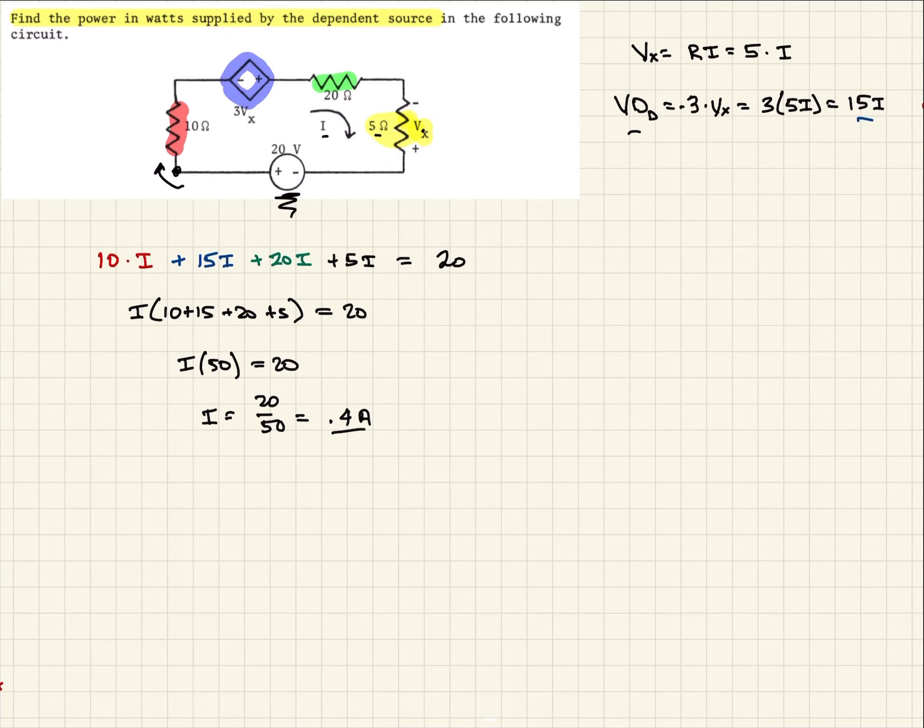Okay. So now we go back to this equation here where we see what our voltage drop across our dependent source. And so if we can now say that our voltage drop across our dependent source, D, is equal to 15I. So that should be 15 times 0.4. And we multiply that out. And that's going to be 6 volts.